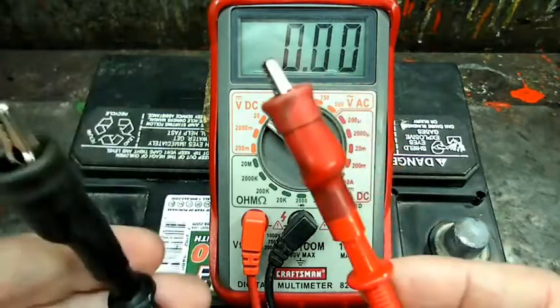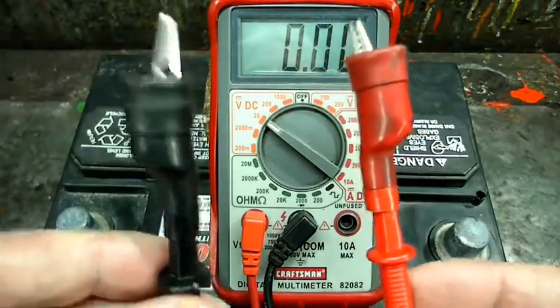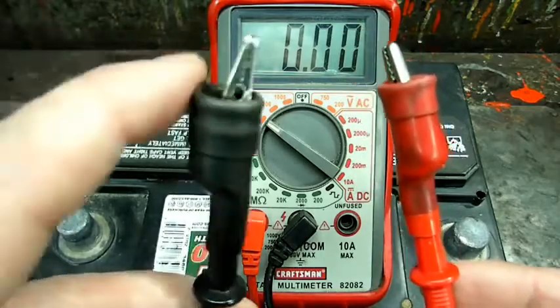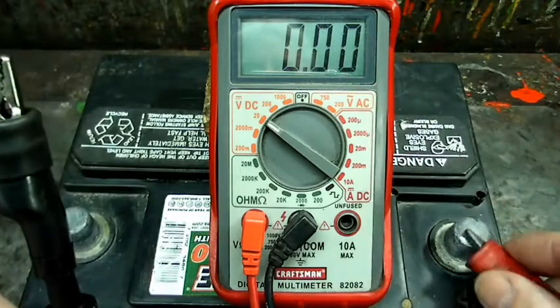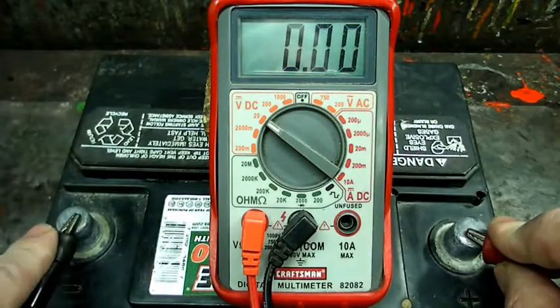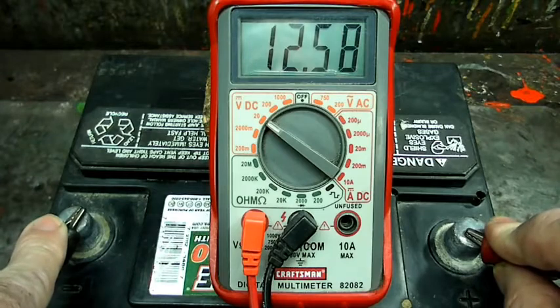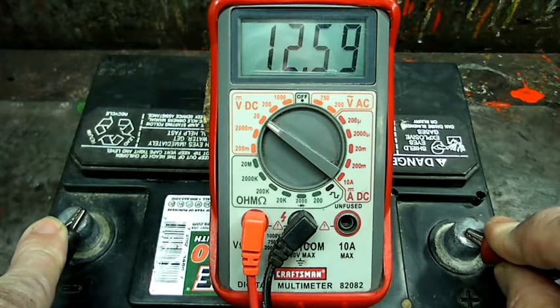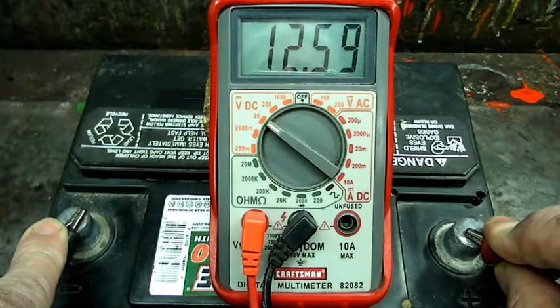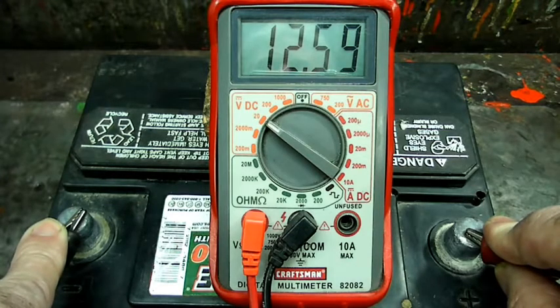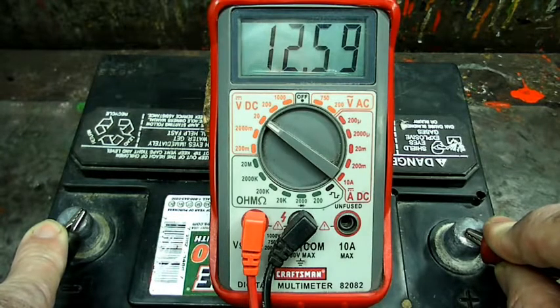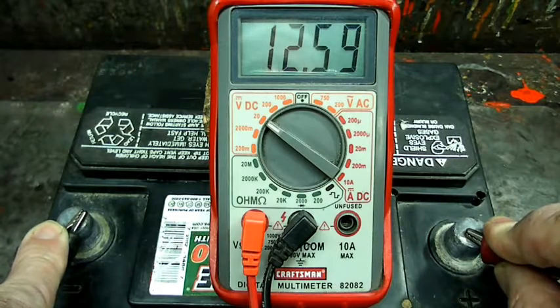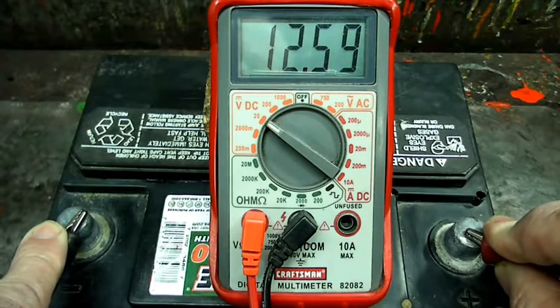Now on your multimeter you'll have two leads. The black lead will go to the negative, and the red will go to the positive. And once we put it on the battery we can read the voltage. And in this case we have 12.59 volts. So that's all there is to using the voltage DC scale.